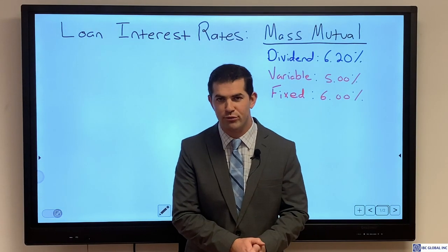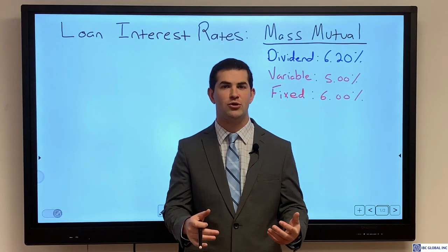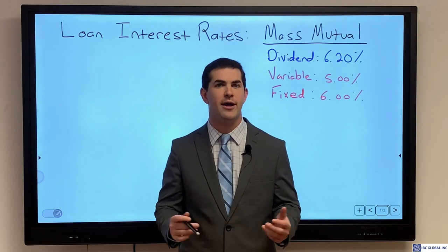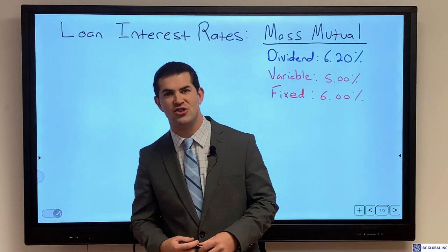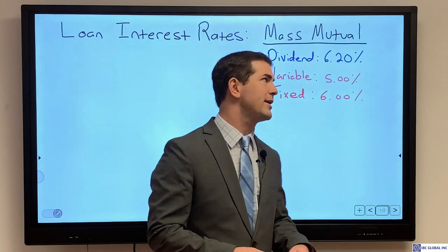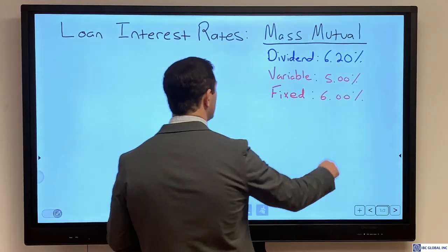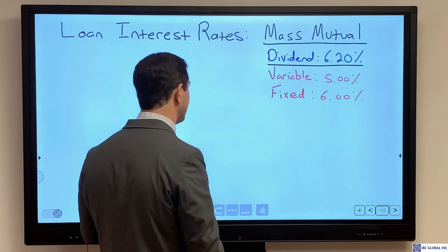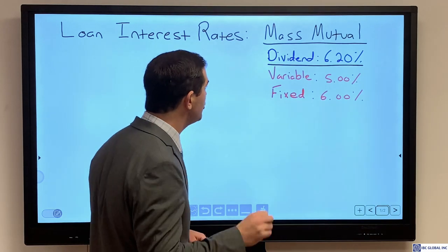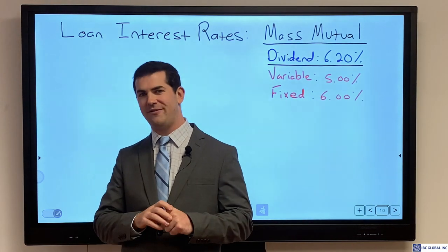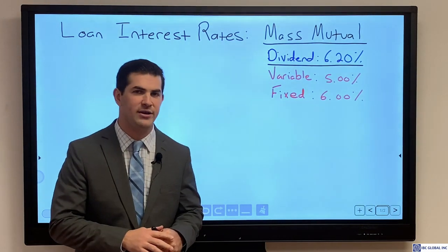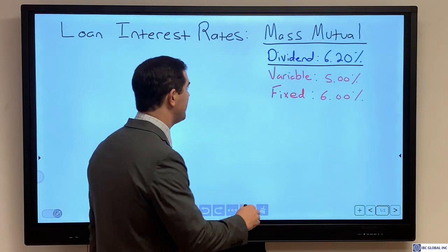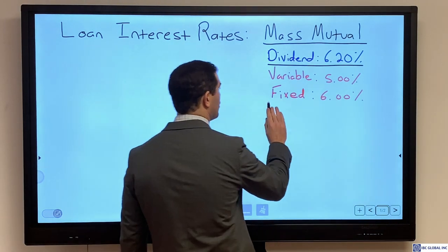Here we're going to go through loan interest rates, and we're going to particularly focus on MassMutual. MassMutual's 2020 dividend rate will be 6.2%, and they have two loan interest rates available: a variable loan rate, which we're going to go into full detail on, and a fixed loan rate.